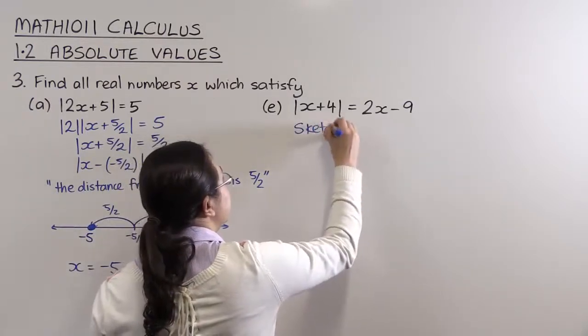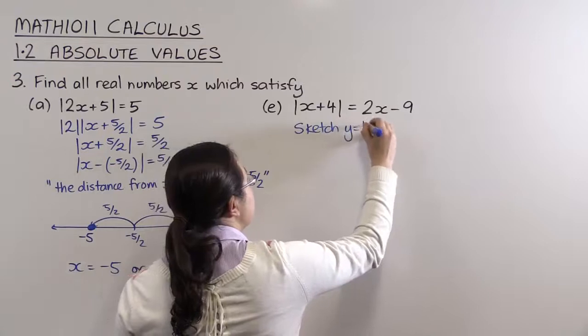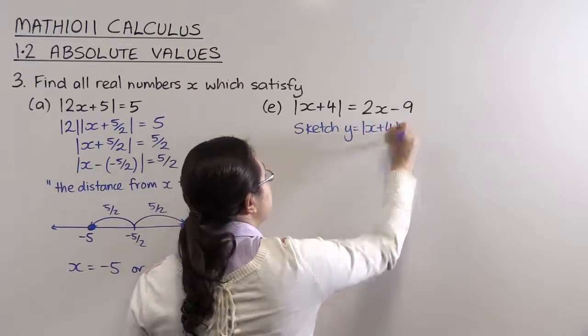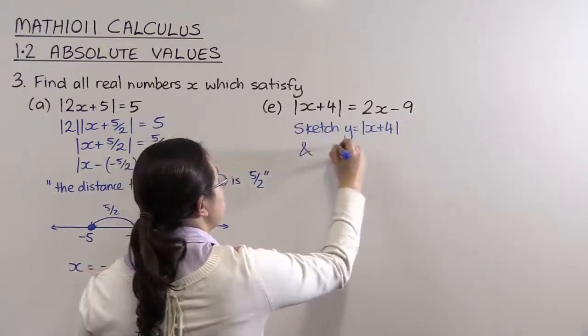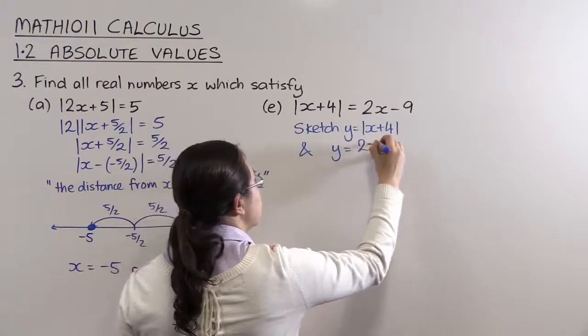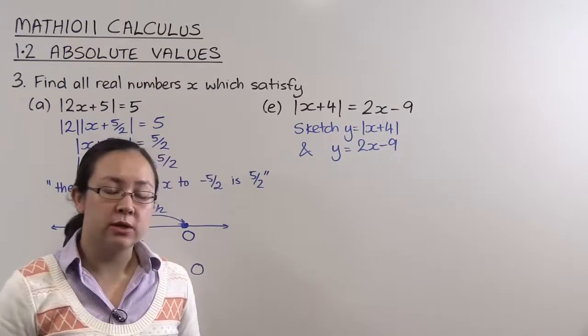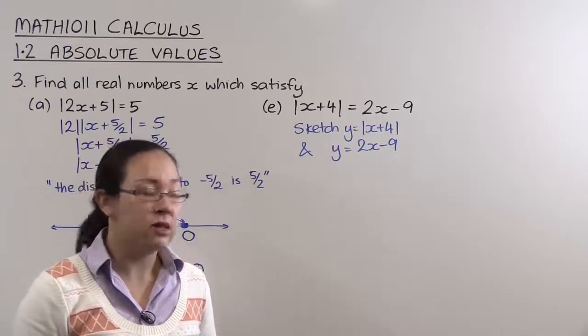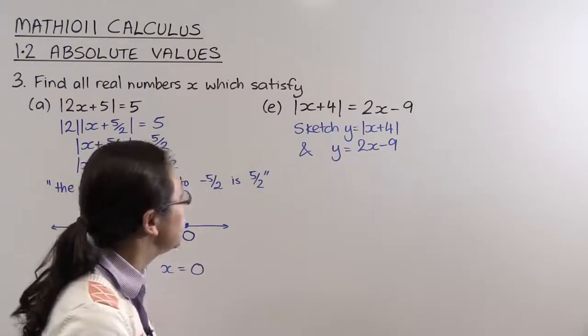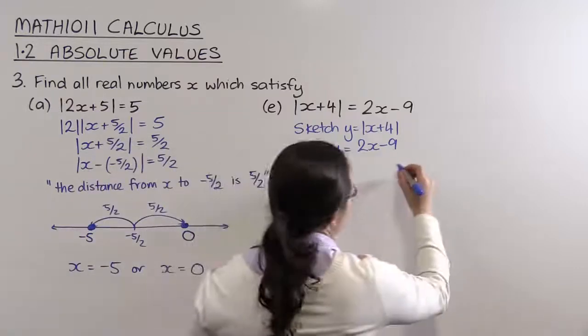So what we're going to do is we're going to sketch some graphs. We're going to sketch y equals the absolute value of x plus 4, and we're also going to sketch y equals 2x minus 9. And what we're looking for on that sketch is we're looking for the points of intersection, in particular the x value for the point of intersection. So let's sketch this graph.